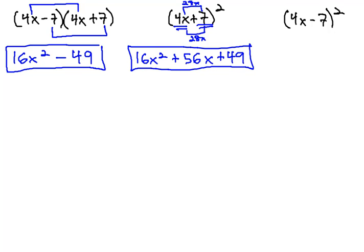Be very careful with signs, however, as we're squaring our binomials. This next example, 4x minus 7 squared,